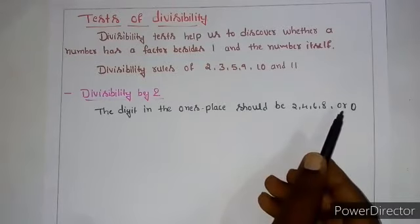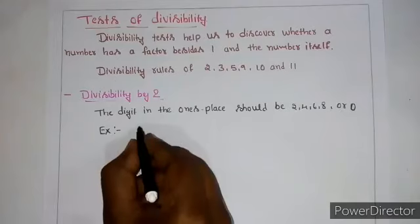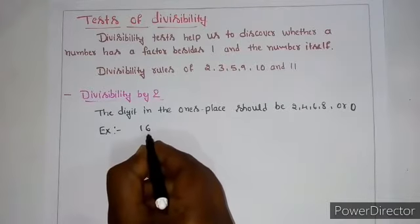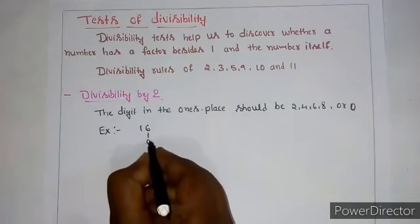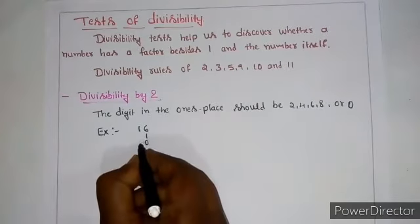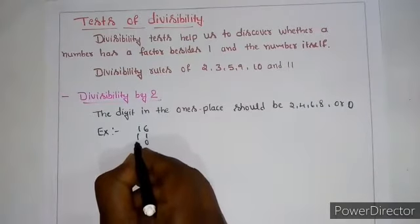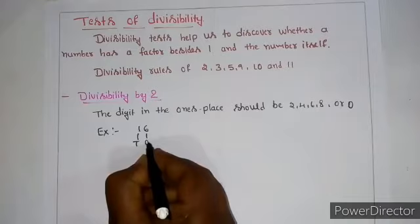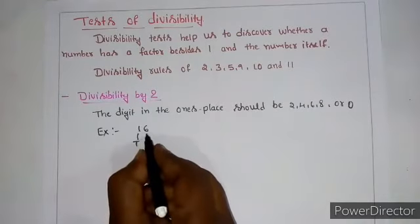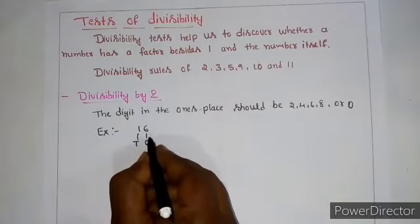For example, if you take 16. 6 is in the place of 1, and 1 is in the place of 10. Here, in the 1's place, 6 is there. Then this number is divisible by 2.